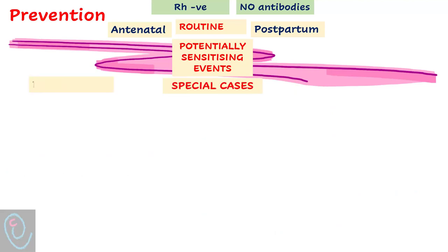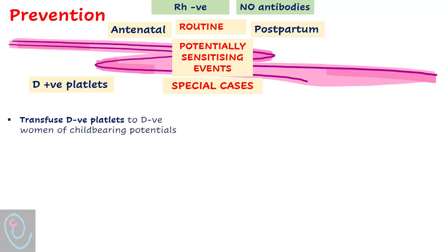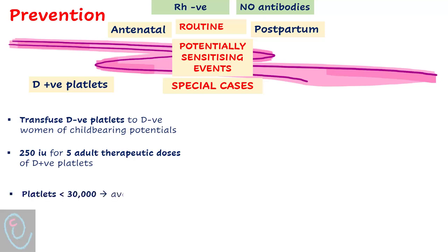Regarding transfusion of platelets, whenever possible transfuse D negative platelets to a D negative woman of childbearing potential. However, in case of transfusion of D positive platelets, 250 international units of Anti-D is required to neutralize five adult therapeutic doses of D positive platelets. If platelet count is less than 30,000, avoid intramuscular injection.